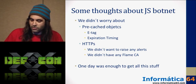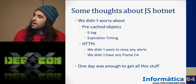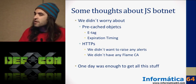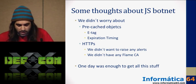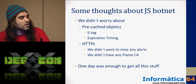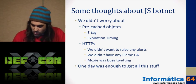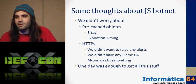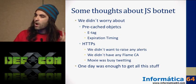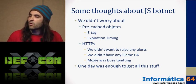Some thoughts about our JavaScript botnet. In this example, we didn't worry at all about doing something special with HTTPS connections. We didn't worry about cached objects using ETags or special tricks to force cache expiration. We didn't want to touch HTTPS because we didn't want to raise any alerts. And of course, we didn't have a Flame-style digital certificate, and Moxie was very busy tweeting so we couldn't contact him. The good point: we did it all in just one day — configure the proxy server, configure Apache, publish the IP address, create the JavaScript, and collect all this information.